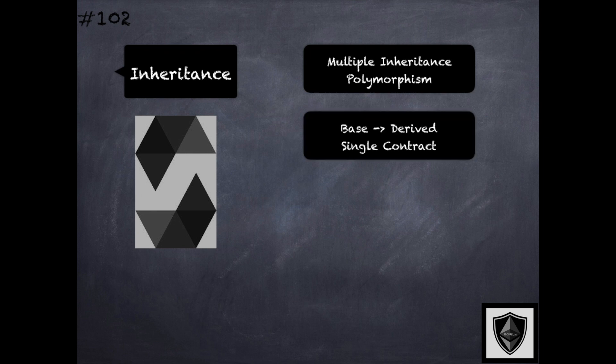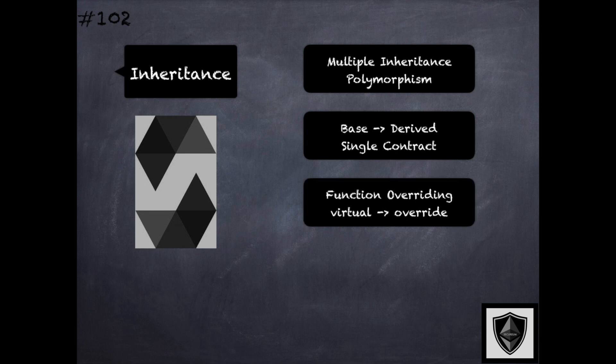When a contract inherits from multiple other contracts, only a single contract is created on the blockchain with the code from all the base contracts compiled into the created contract. Solidity supports function overriding, which means that functions in the base classes can be overridden by those in the derived classes, which can change their behavior if they are marked as virtual using the virtual keyword. The overriding function must then use the override keyword to specify that it's overriding the virtual function in the base classes.